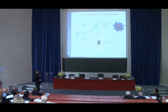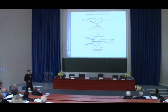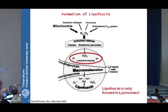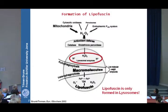Some 15 to 20 years ago, Ulf Brunk and Alex Terman formulated the mitochondrial-lysosomal theory of aging. They said macromolecules are taken up into lysosomes, where you have lysosomal enzymes, a radical process due to iron taken up from mitochondria, and especially the acidic pH — a major component for processing protein aggregates into the final product known from pathology as lipofuscin.